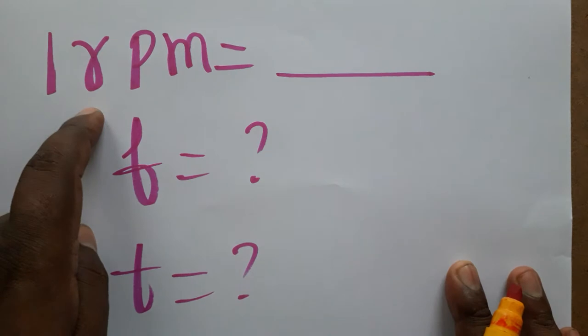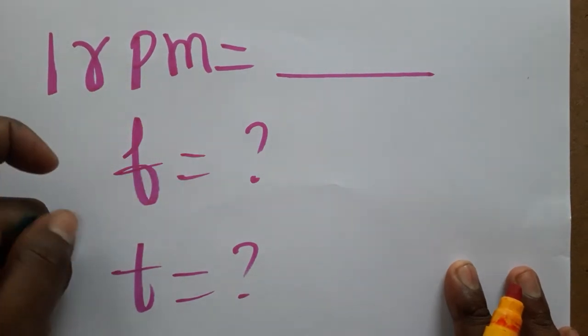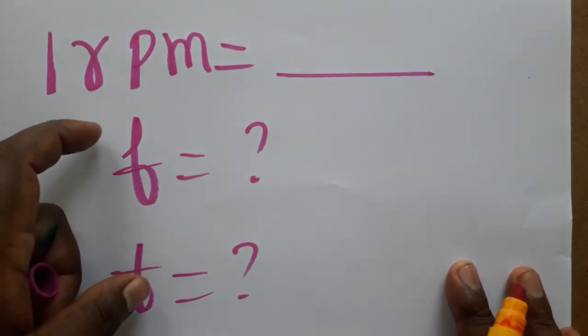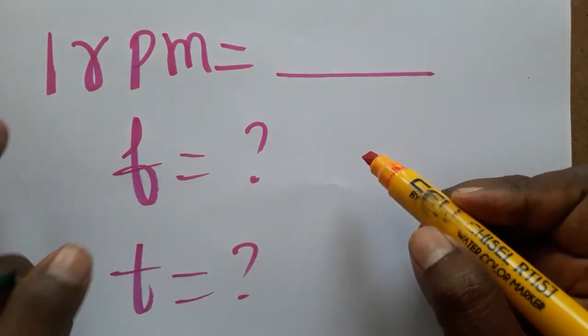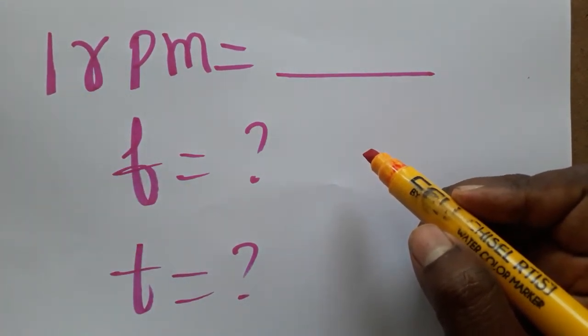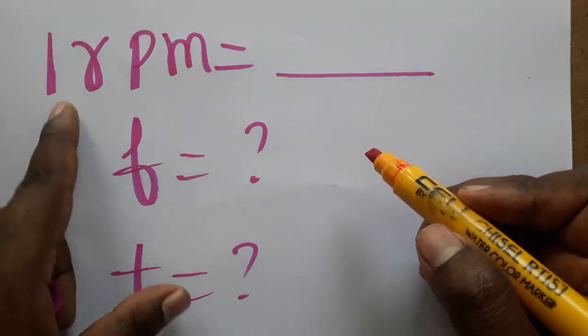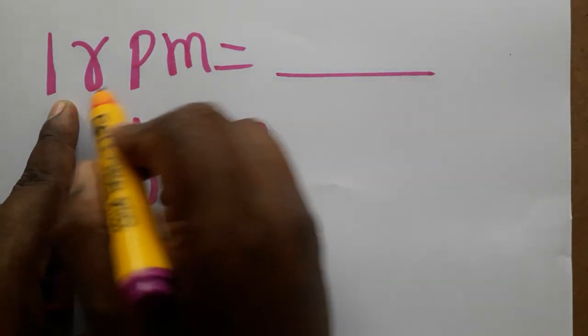1 RPM represents its frequency. RPM is rotation per minute, or oscillation per minute, or vibration per minute. So this is going to represent frequency.